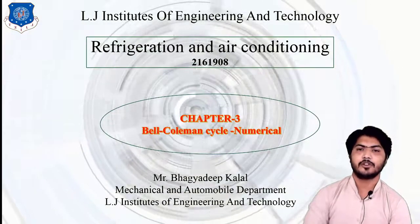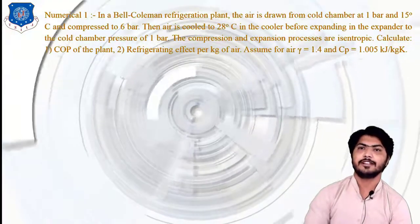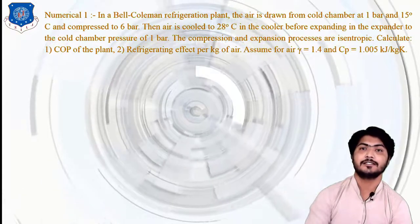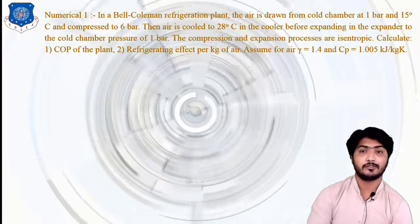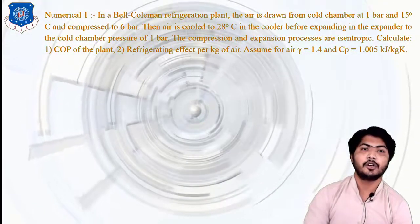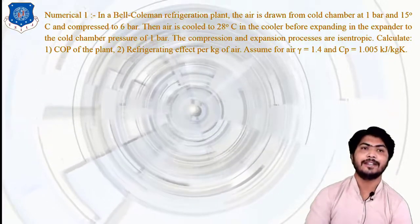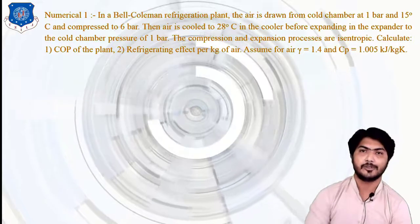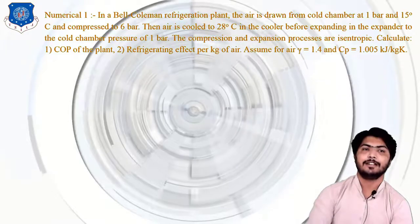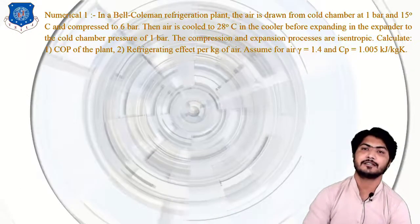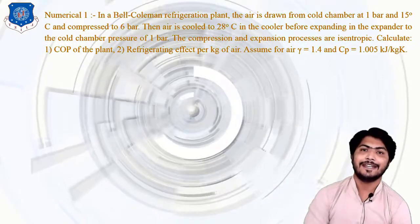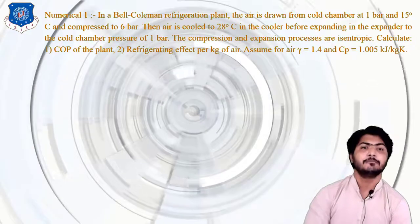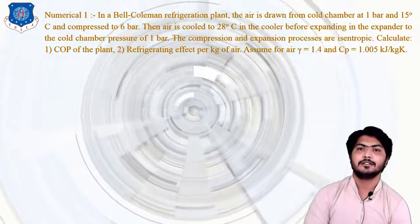We discuss today problems based on the Bell-Coleman cycle or Joule cycle. Problem number 1: in a Bell-Coleman refrigeration plant, the air is drawn from the cold chamber at 1 bar and 15 degree centigrade and compressed to 6 bar. Then air is cooled to 28 degree centigrade in a cooler or heat exchanger before expanding in the expander to the cold chamber pressure of 1 bar.